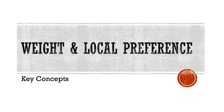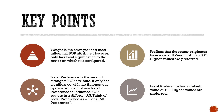The first BGP path attribute I want to talk about is weight. Weight is the strongest and most influential BGP path attribute. However, it only has significance to the local router on which it is configured. So whilst it has complete precedence on that router, it will not affect the calculations of the other routers.